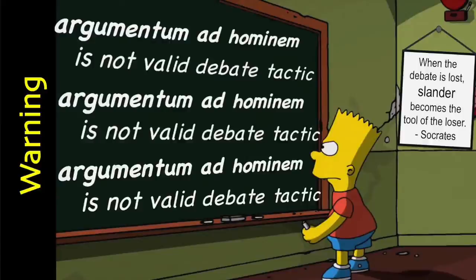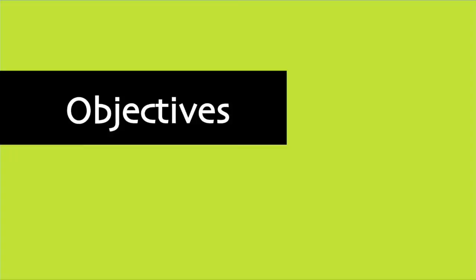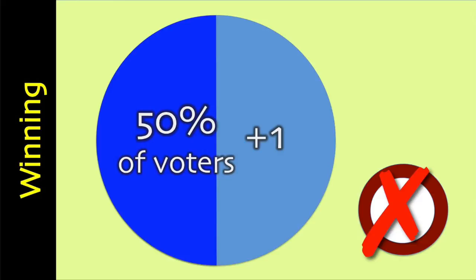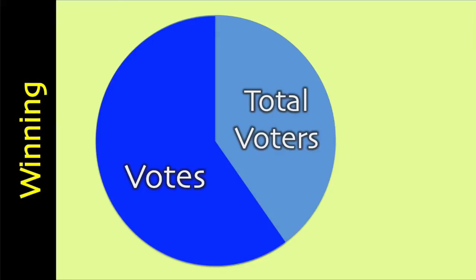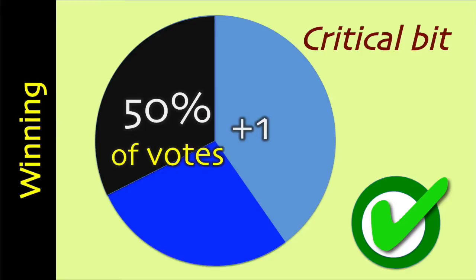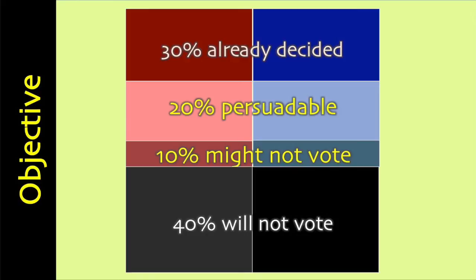Now let's take a look at the high-level objectives of an election negative campaign. To win the election, our goal is to get more votes than our opponents. We do not have to get 50% plus one of all citizens to vote for us, just a majority of actual votes. This can be accomplished by having more of our supporters voting and fewer competition supporters participating. As a starting point, we know that roughly 30% of the people have already decided who they will vote for and will not change their minds. 40% of citizens will definitely not vote, and 10% might not vote. 20% will probably vote but are undecided — these are known as the persuadable. We might be able to persuade them to vote for us.